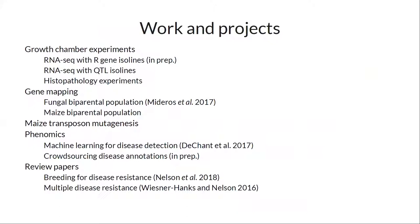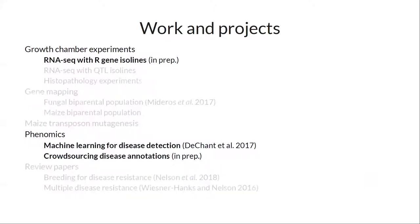I've been involved in a lot of different things: growth chamber experiments, RNA-seq experiments, system pathology, maize transposon mutagenesis as one of my main projects, gene mapping, high-throughput phenotyping, and writing a couple of reviews with Rebecca. I'm going to focus on two main things, dividing it into a micro and macro view: micro being an RNA-seq experiment using argene isolines that we're wrapping up the paper for, and on the macro scale, a phenomics high-throughput phenotyping project about aerial imaging of northern leaf blight.